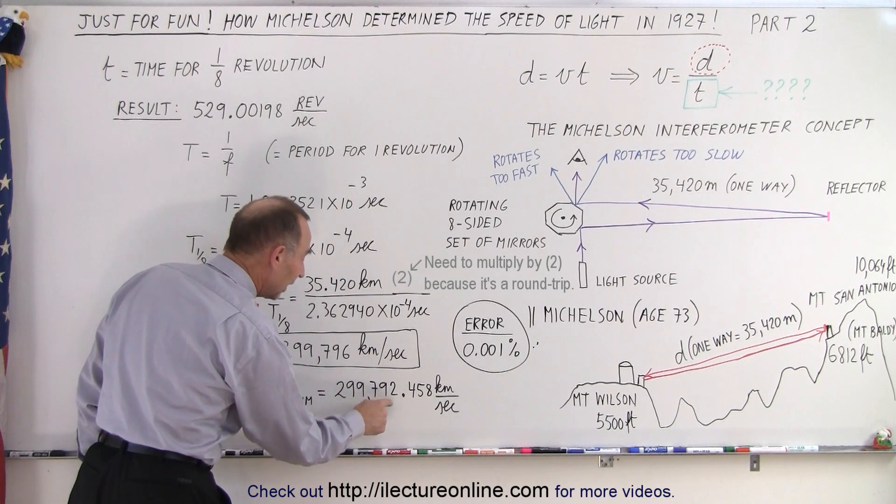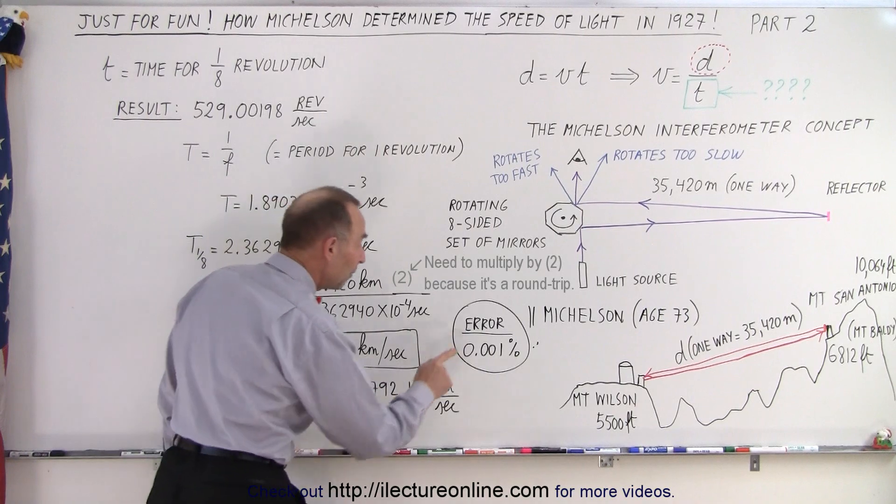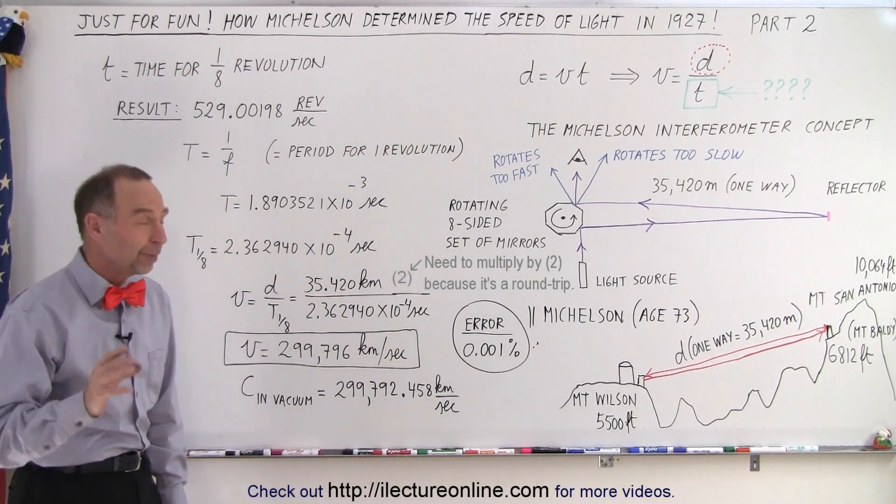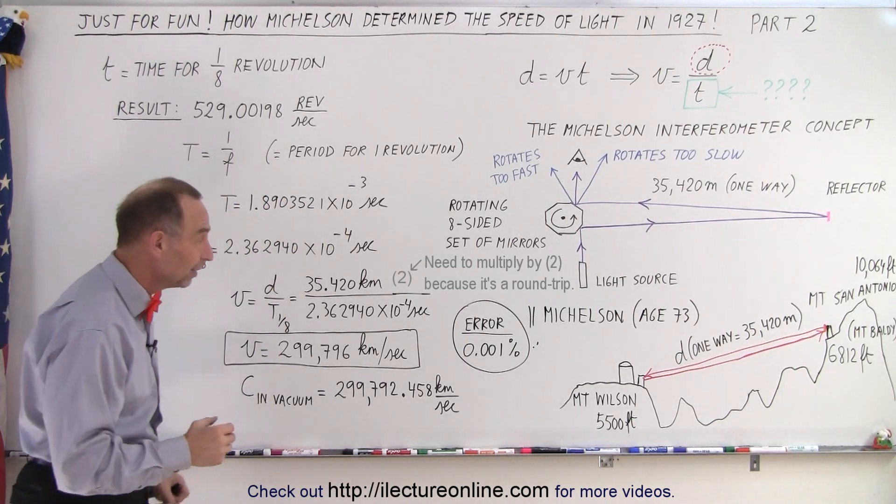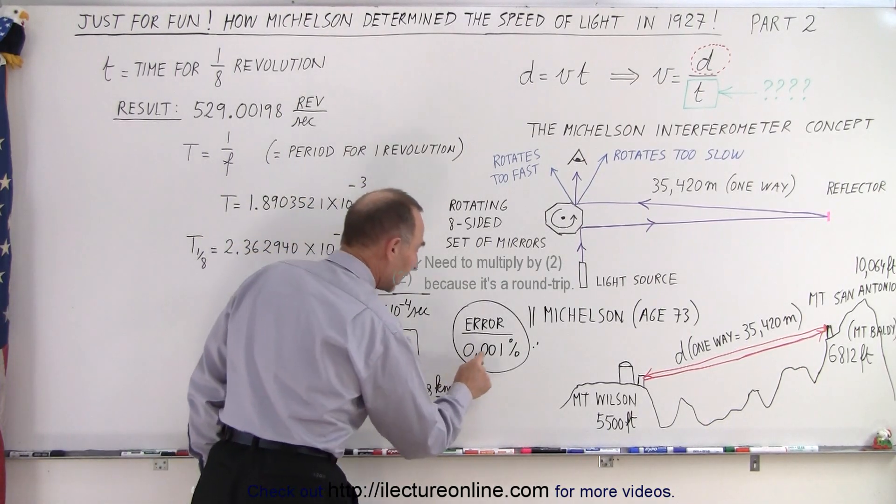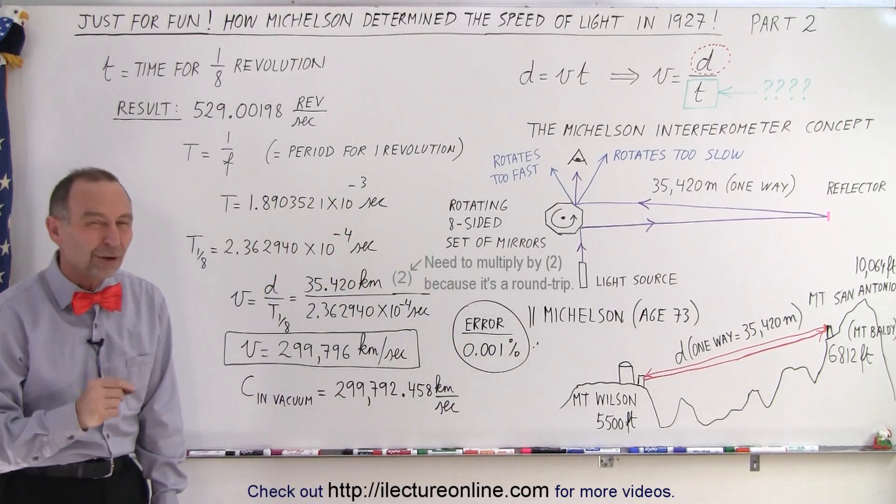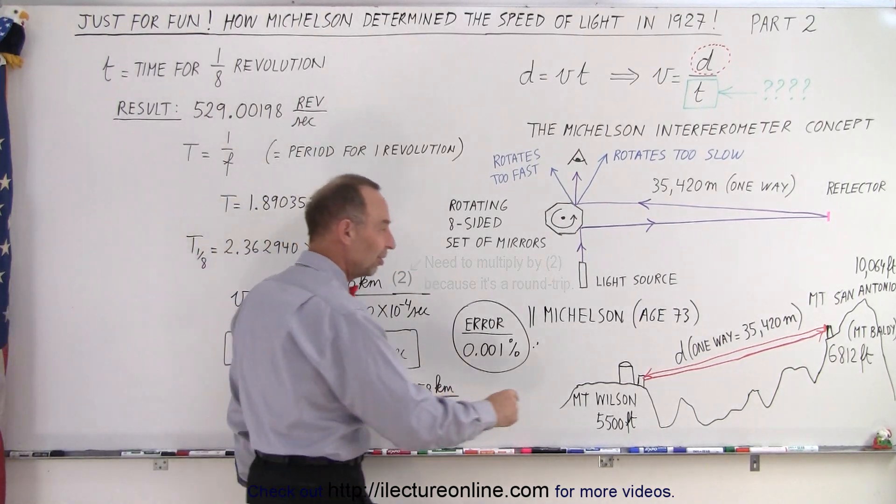They were actually off by only 0.001 percent. They determined the speed of light back in 1927 due to the work that Michelson did at age 73. They came up with a number where they were only off by 0.001 percent. Imagine the work that went into measuring this distance accurately.